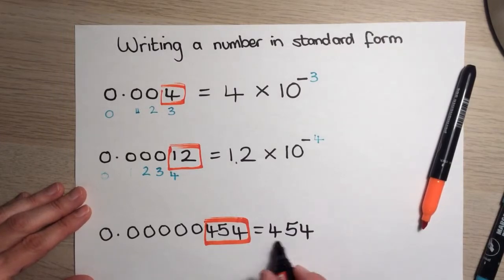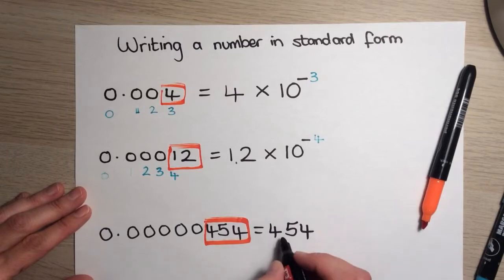Now, I need to change this into a number between 1 and 10. So, if I put it there after the first digit, then it's 4.54. Again, notice I haven't changed the order. It's still 4, 5, 4.